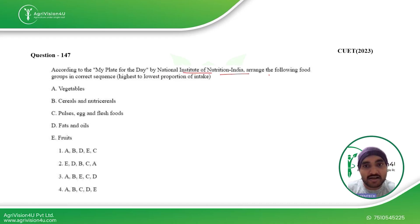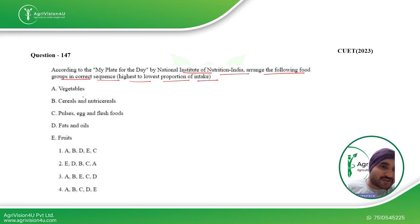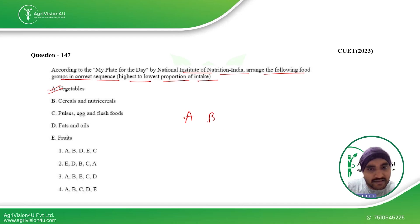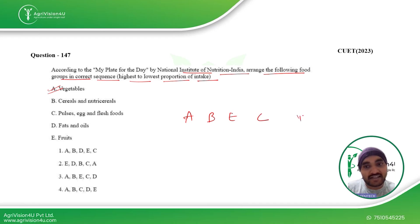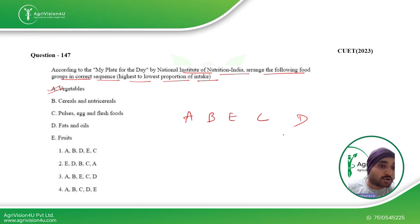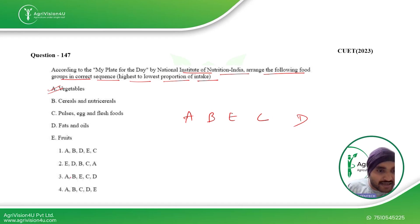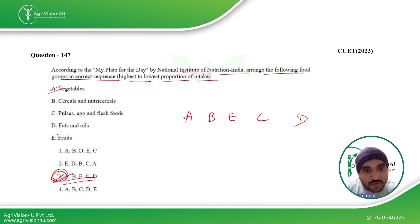According to My Plate for the Day by the National Institute of Nutrition, India, arrange the following food groups in correct sequence from highest to lowest proportion of intake. First we should have vegetables (A), then cereals and nutraceuticals (B), then fruits (E), then cereals, pulses, and fresh fruits (C), and finally fats and oils (D) in the least amount — only essential fats such as omega-3, omega-6, EPA, DHA, ALA, eicosapentaenoic acid, and docosahexaenoic acid. So the sequence A, B, E, C, D is the third option and the right answer.